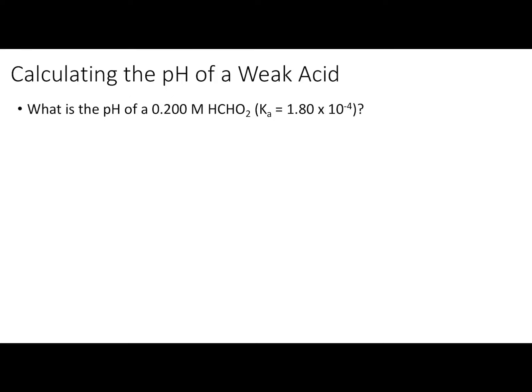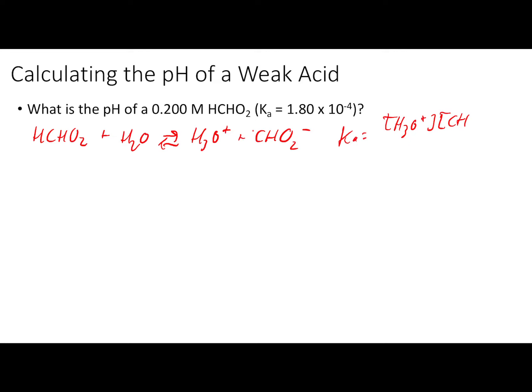Now let's move to our second problem and calculate the pH of a weak acid. What is the pH of 0.200 M formic acid, which has a Ka of 1.80 × 10⁻⁴? The first step is to write the reaction of the acid with water — an equilibrium process. Formic acid HCHO2 reacts with water to produce H3O+ and CHO2−. The Ka expression has the concentration of H3O+ times CHO2− on top, and the concentration of HCHO2 on the bottom.